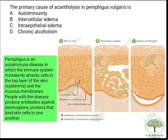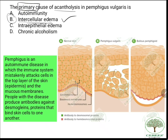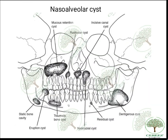Now, the MCQ: the primary cause of acantholysis in pemphigus vulgaris. Most would go for option B — intercellular edema — which is correct in sequence, but here they ask for the primary cause. The primary cause is the formation of autoantibodies against desmoglein 1 and 3; the autoimmunity itself drives the edema and subsequent acantholysis and suprabasal split. So the correct answer is option A — autoimmunity.